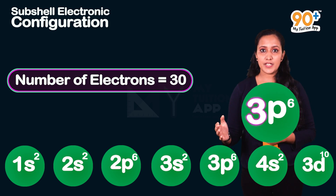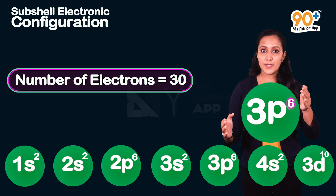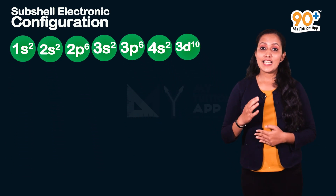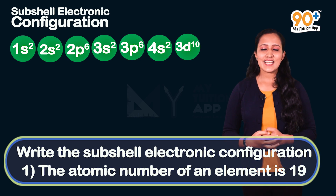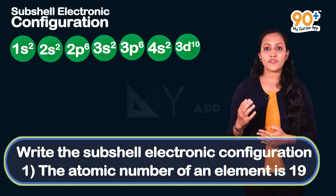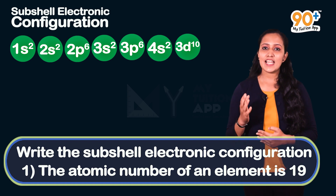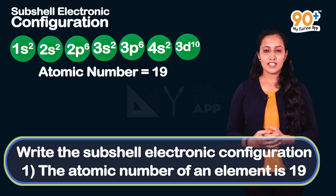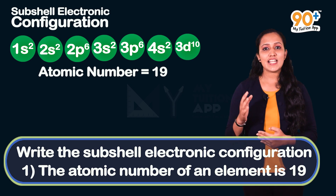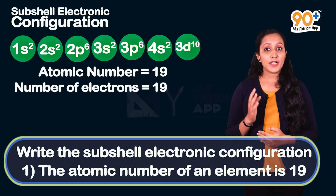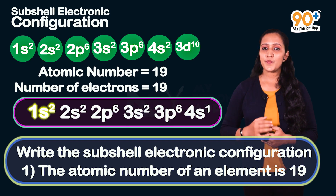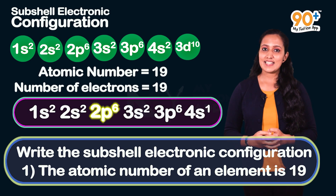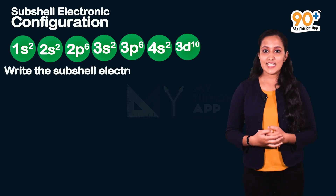First question: Write the subshell electronic configuration for atomic number 19. Since atomic number is 19, the number of electrons is 19. The subshell electronic configuration is: 1s², 2s², 2p⁶, 3s², 3p⁶, 4s¹.